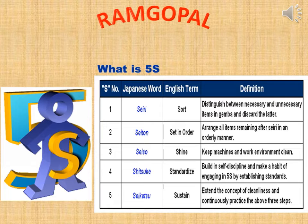Shitsuke — Standardize: Build in self-discipline and make a habit of engaging in 5S by establishing standards. Seiketsu — Sustain: Extend the concept of cleanliness and continuously practice the above three steps.